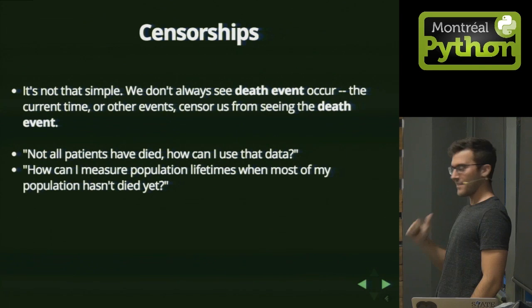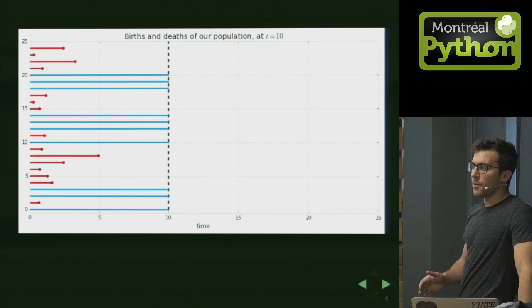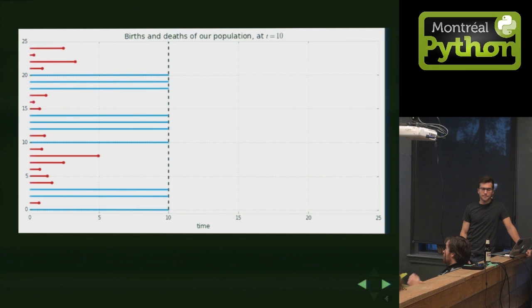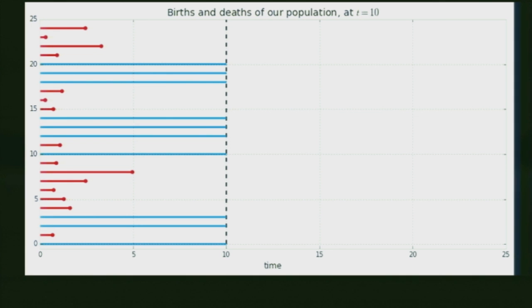How can I measure population lifetimes when most of my population hasn't died yet? That's a very traditional problem. Graphically: suppose everyone's born at time zero. The red lines are people who have died, the blue lines are people who haven't. At time 10, if I want to know the average lifetime, naively taking the mean would underestimate it, because I haven't seen the blue individuals die yet — I'm underestimating how long they're going to live. So that's censorship. It's time 10 right now, and I still want to know what the average life expectancy is.